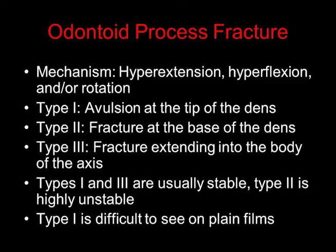Odontoid process fractures occur because of hyperextension, hyperflexion, and/or rotation. Type 1 is an avulsion at the tip of the dens. Type 2 is a fracture at the base of the dens. Type 3 is a fracture extending into the body of the axis, otherwise known as the body of the C2 vertebra. Types 1 and 3 are usually stable, but type 2 is highly unstable. Type 1 is also quite difficult to see on plain films because it's just an avulsion of the very tip.